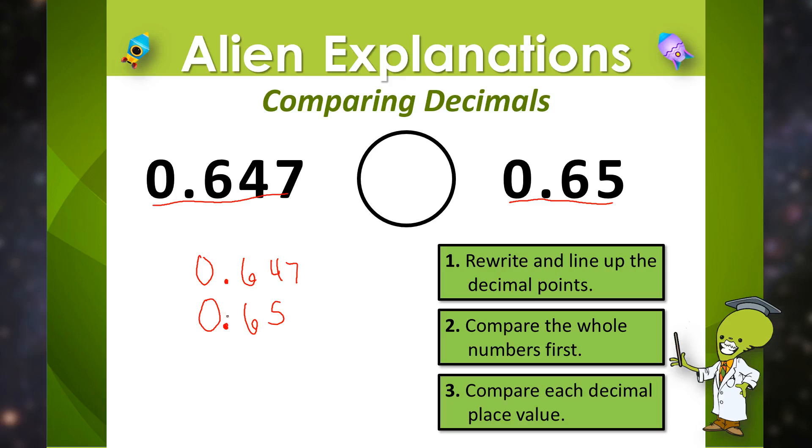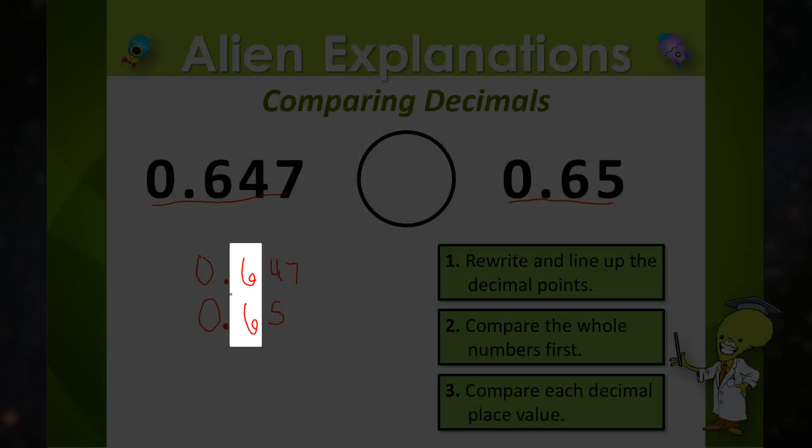Now we are going to compare each decimal place value spot. If I look at the number directly behind the decimal in the tenths place I have a six and a six. So right now we are still equal. Now if I go to the next place value spot this is where it is different.